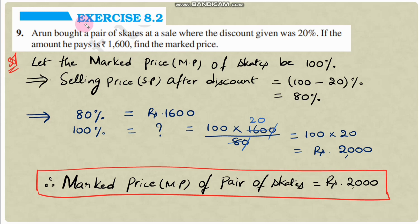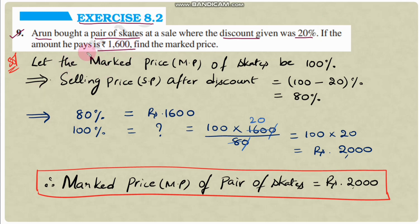Exercise 8.2, Question number 9: Arun bought a pair of skates at a sale where the discount given was 20%. If the amount he pays is ₹1600, find the market price. So here, Arun purchased a pair of skating shoes at a discount — 20% discount — and he paid ₹1600 to the shopkeeper. We need to find the market price.